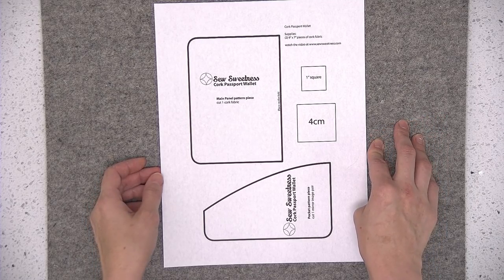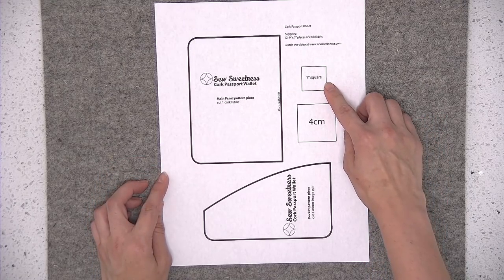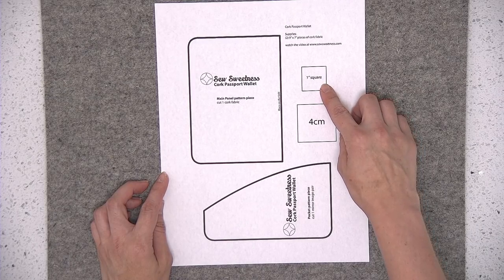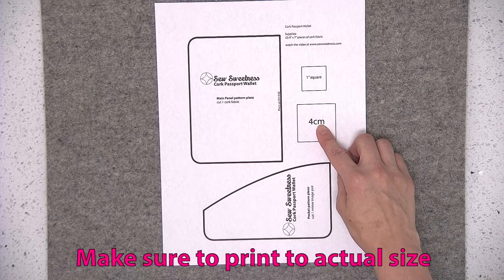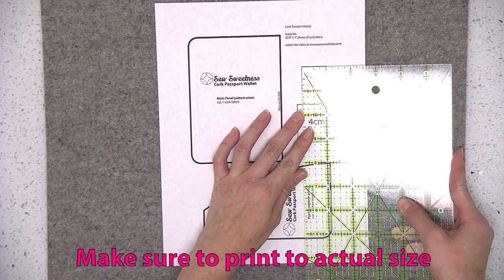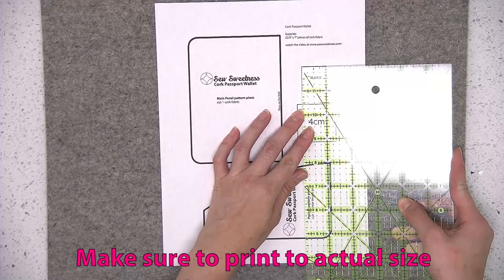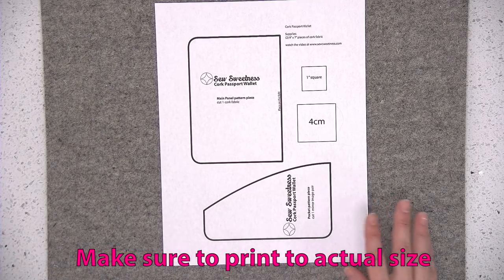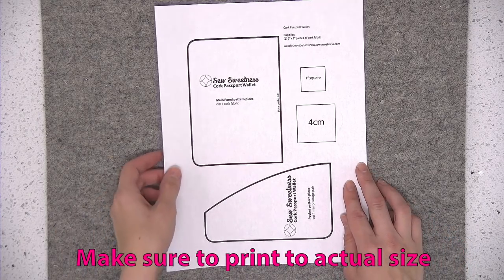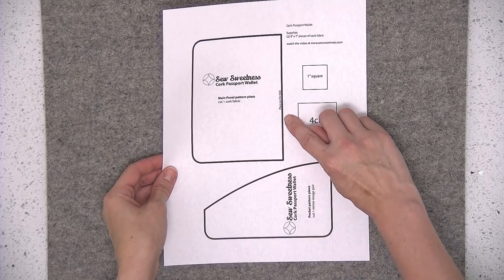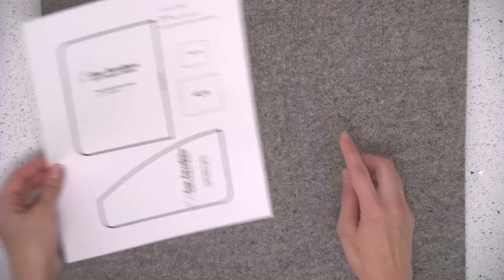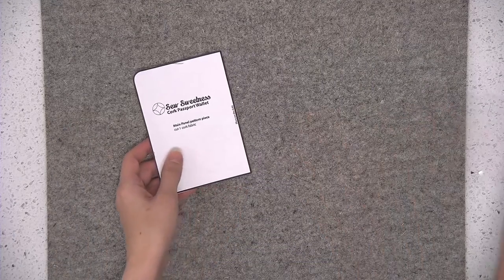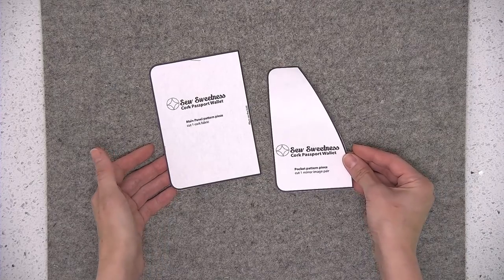It needs to be printed at actual size and you can verify that it printed out correctly by measuring either the 1 inch square or the 4 cm square with your ruler and it should be exactly either 1 inch or 4 cm, not slightly smaller or slightly larger. To cut the two templates out you want to cut to the outside of the thick black line and when you've done so your two pattern pieces should look like this.